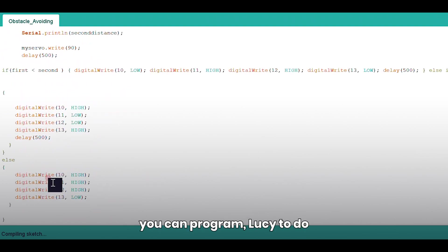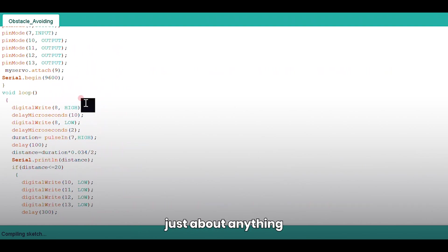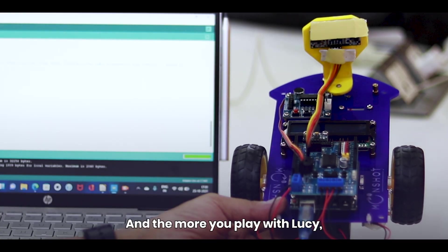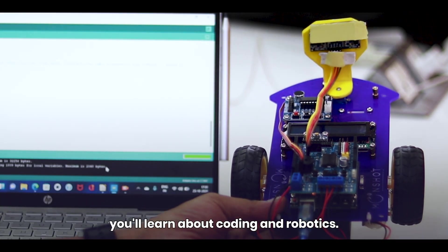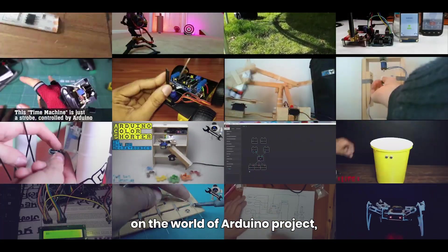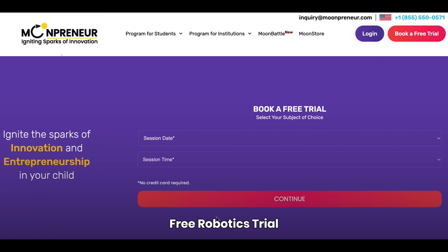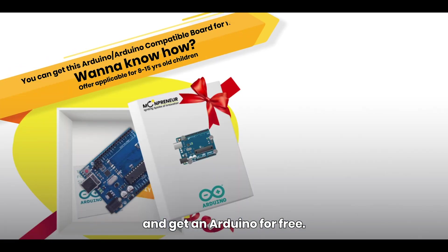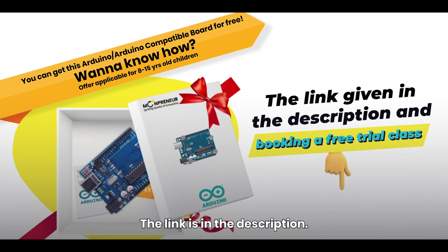And the best part, you can program Lucy to do just about anything you want by simply putting the code in the Arduino. And the more you play with Lucy, the more you'll learn about coding and robotics. So if you're excited to take on the world of Arduino projects, join Moonpreneur's free robotics trial to build more exciting Arduino projects like Lucy and get an Arduino for free. The link is in the description.